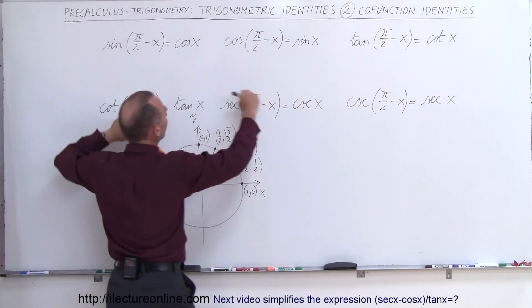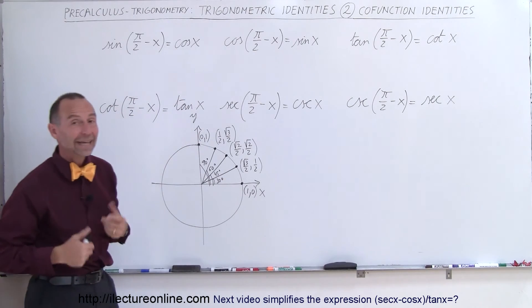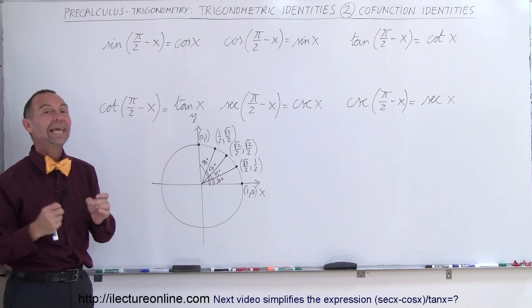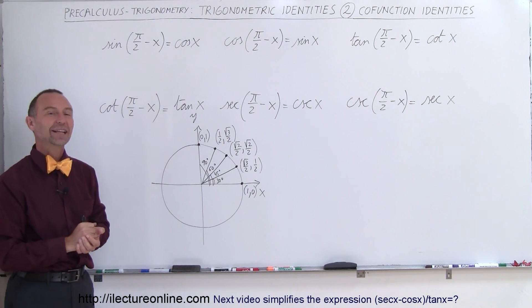So these are what we call the co-functions. These are two co-functions, and those are two co-functions, because they're related in that particular fashion. Knowing this, remembering that, can come in really handy in some instances. So there you go. Those are what we call the co-function identities.